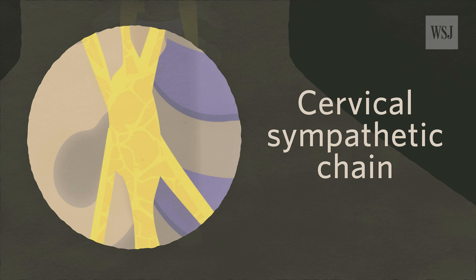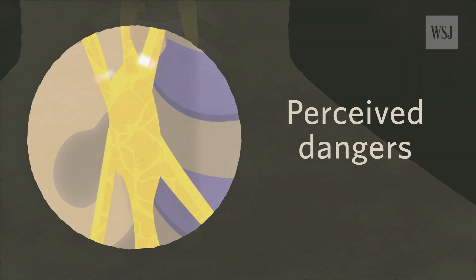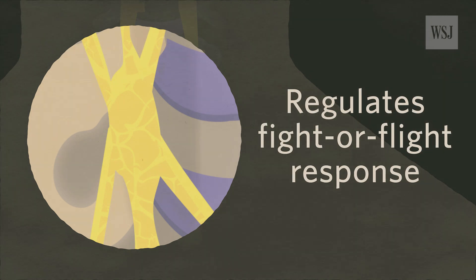This chain is part of the nervous system that prepares the body for perceived dangers and regulates the fight-or-flight response. Sometimes, it can become dysfunctional or activated inappropriately.